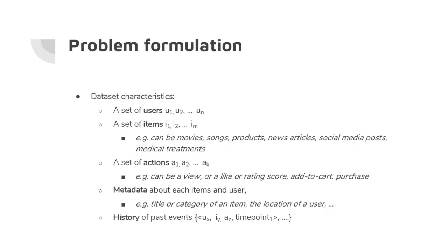Looking at the problem formulation, we have some characteristics for each dataset where you might apply recommendation algorithms. This abstract representation applies across many domains including news, media, and e-commerce. We have a set of users U1 to Un, a set of items E1 to Em — items can be movies, songs, products, news articles, social media posts, or even medical treatments.